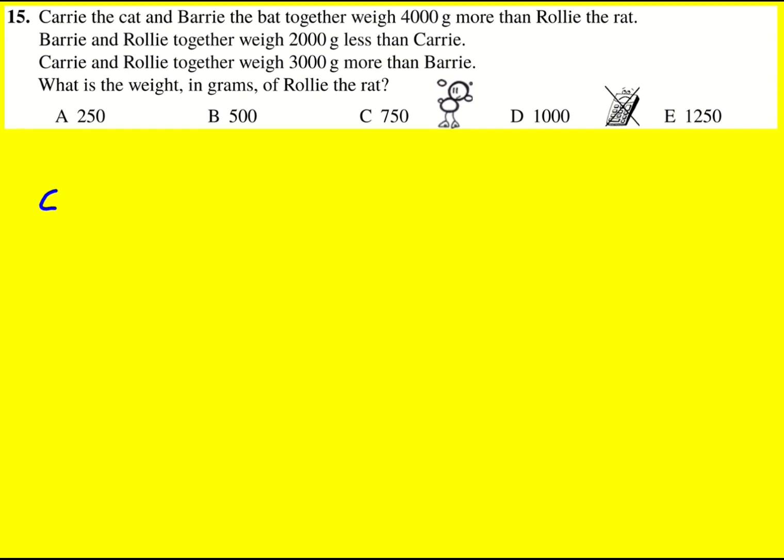So Carrie plus Barry is 4,000 more than Rolly, so it's going to be C + B = R + 4000. We're going to be working in grams throughout this. And then Barry plus Rolly is 2,000 grams less than Carrie.